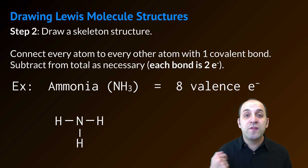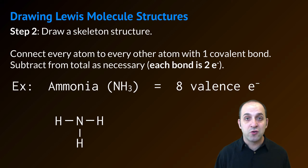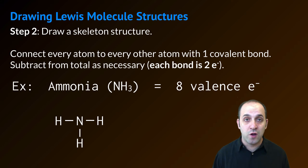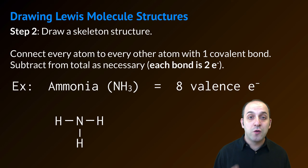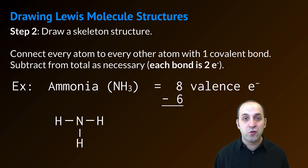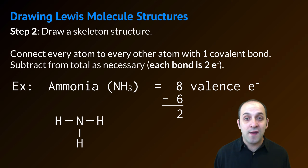Now remember to subtract the total number of valence electrons that we used. Each covalent bond represents two total valence electrons. I've used three covalent bonds here, so I need to subtract six total electrons from my eight. I now have two valence electrons that remain.